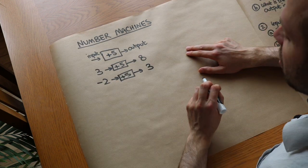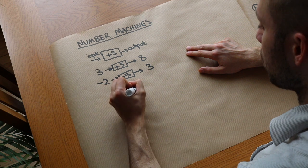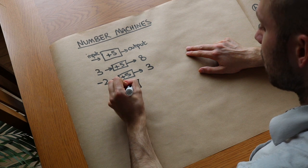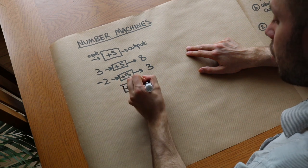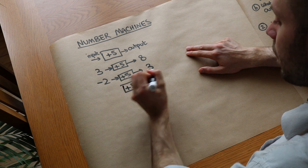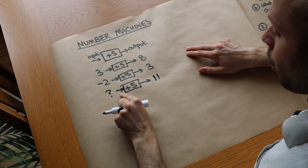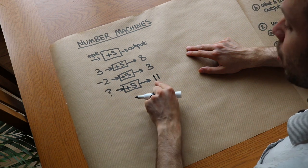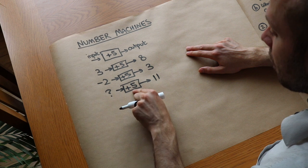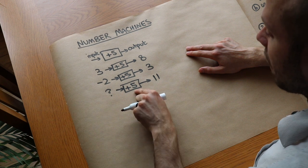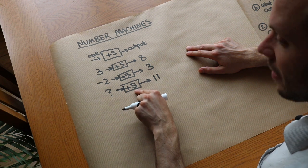And sometimes in exam questions you have to do this backwards. So for example, if I had the number machine was plus 5 and I knew that the output was say 11, then what would the input be? Well, what when you add 5 to it would give you 11? Well to do this plus 5 backwards we can just do the opposite, that's to subtract 5.